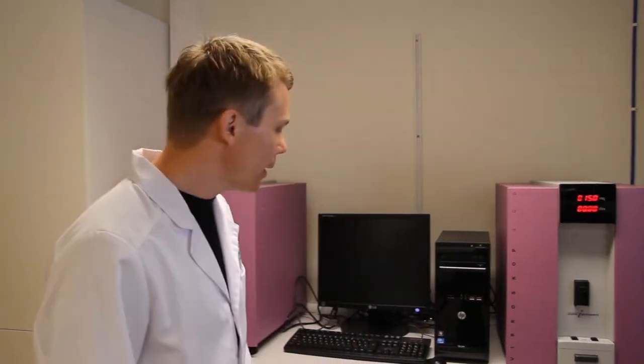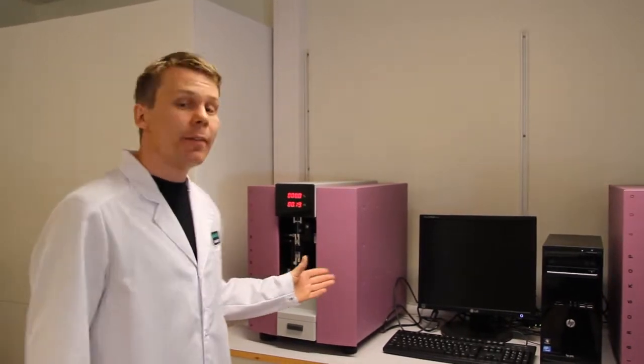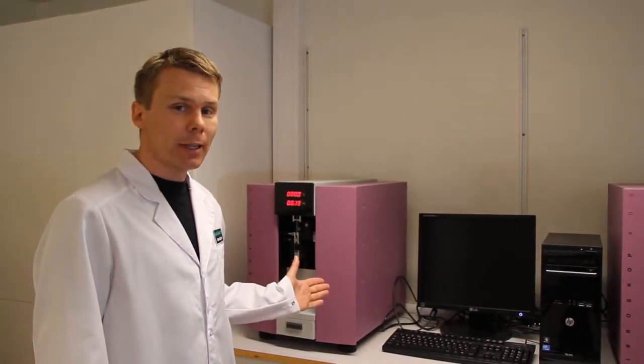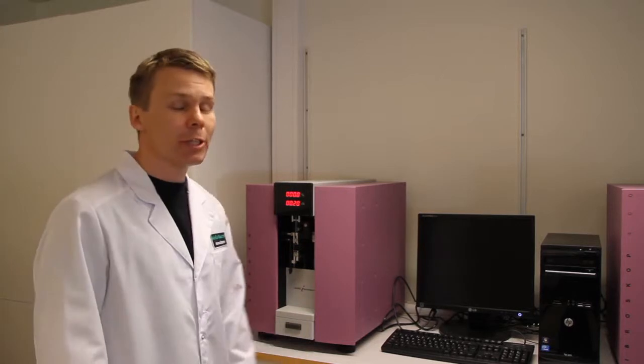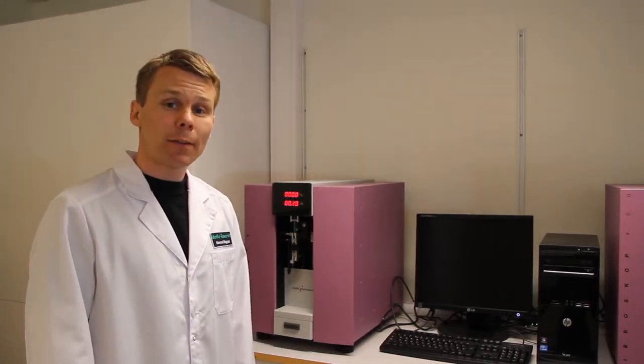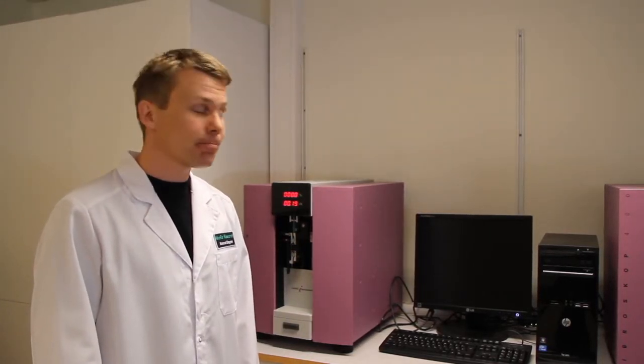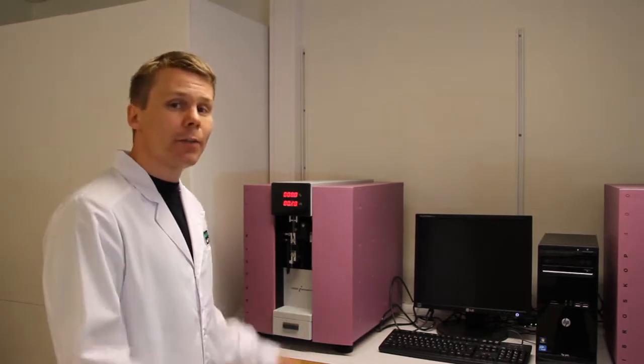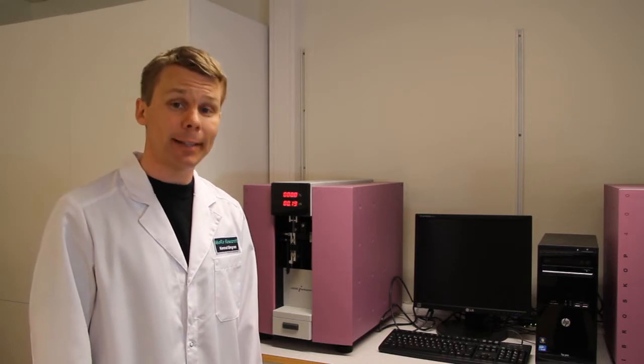To make this possible, we use two instruments. Here on the right side we have a Vibroscope instrument, and with this instrument we are measuring titer or linear density. On the left side here we have a Vibrodine instrument, and with this instrument we are measuring fiber strength and elongation. If we combine those results, we can calculate the very useful and interesting parameter tenacity.